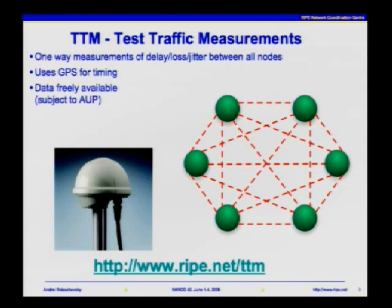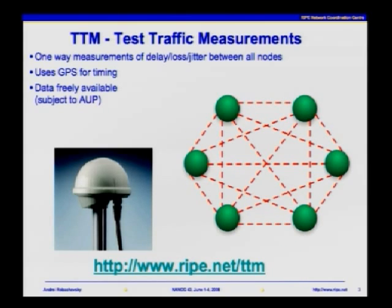The peculiarity of the Test Traffic Measurement Network is that the whole network is very well synchronized. Every node is a Stratum 1 NTP server because it's connected to a GPS antenna. That allows us to perform one-way measurements of packet delay, loss, and jitter. All the data measured among those nodes is collected in a central place and available through various tools that query this database and present data in various forms.